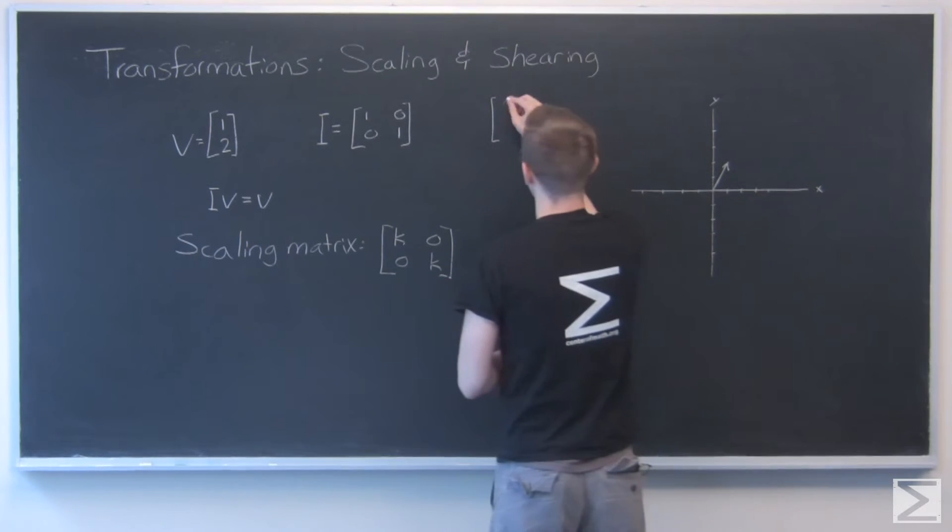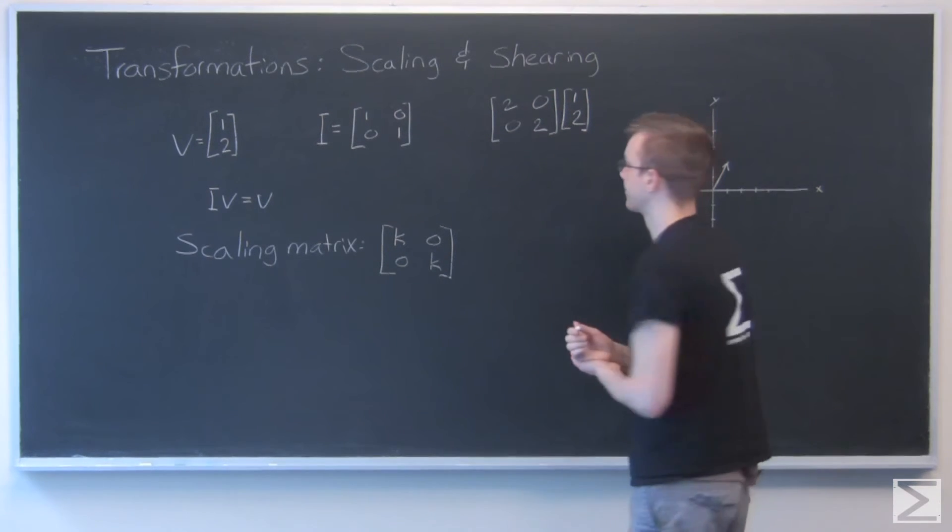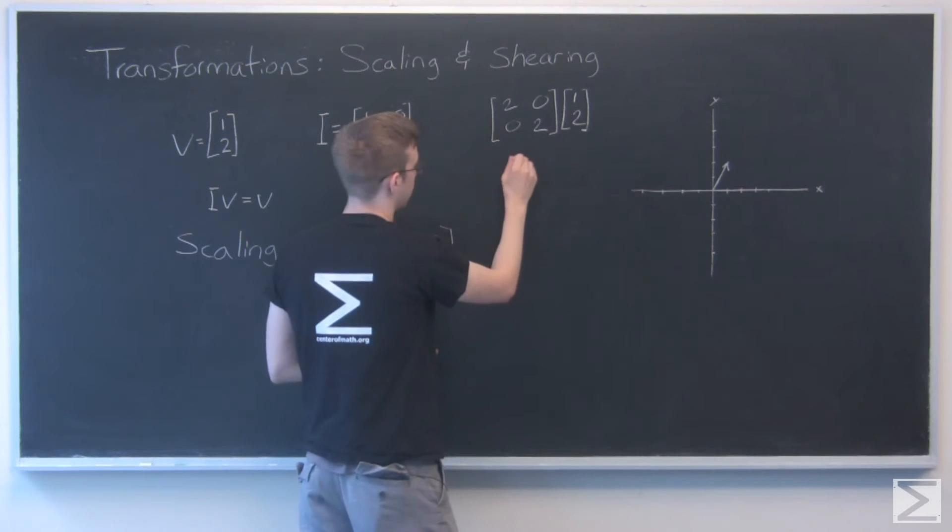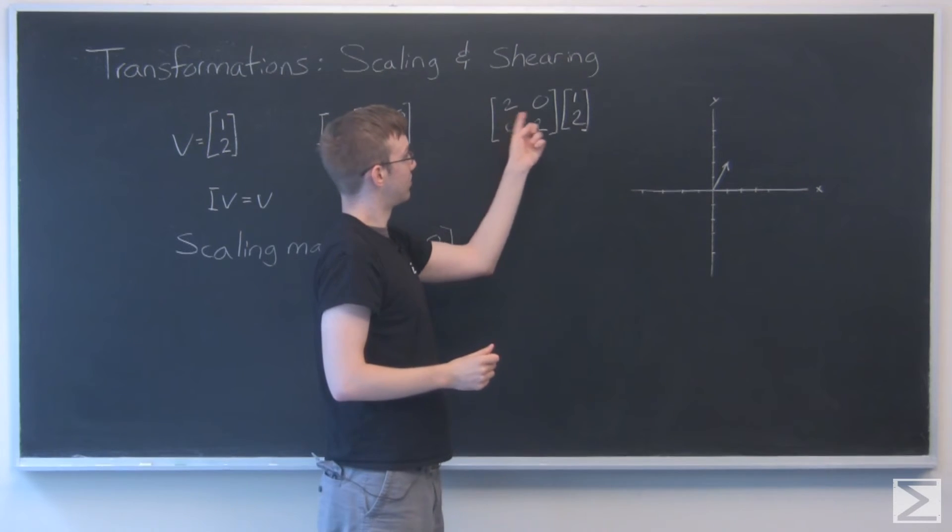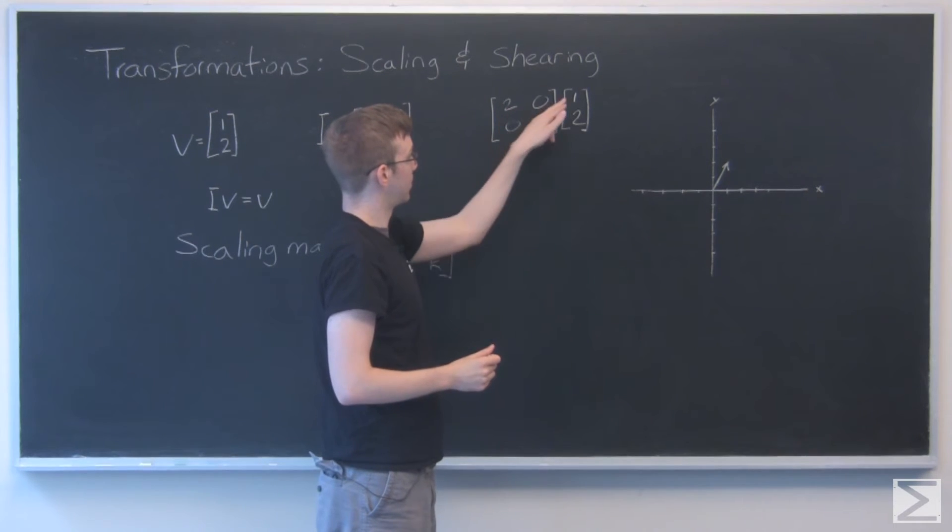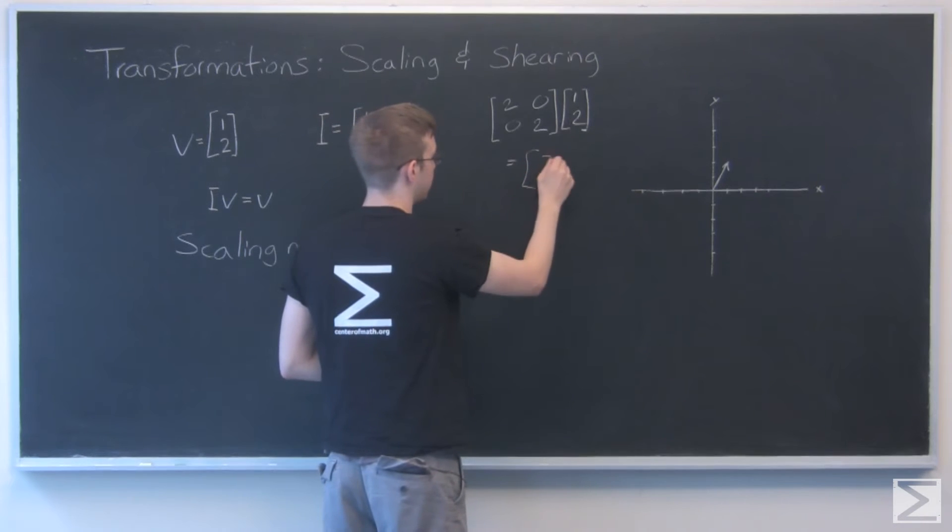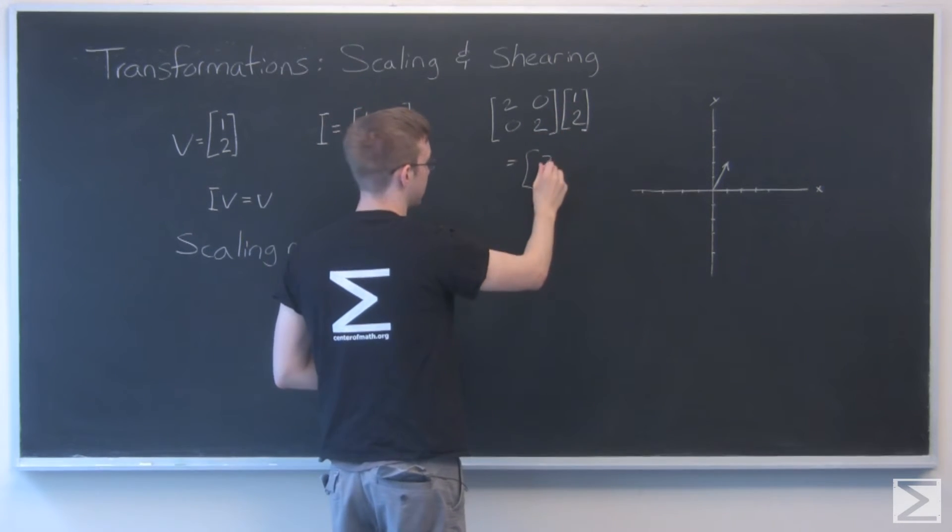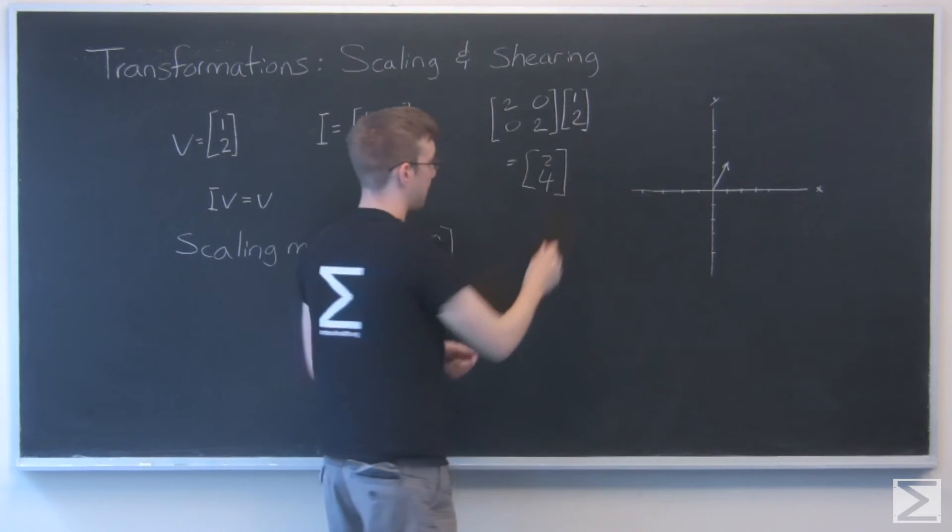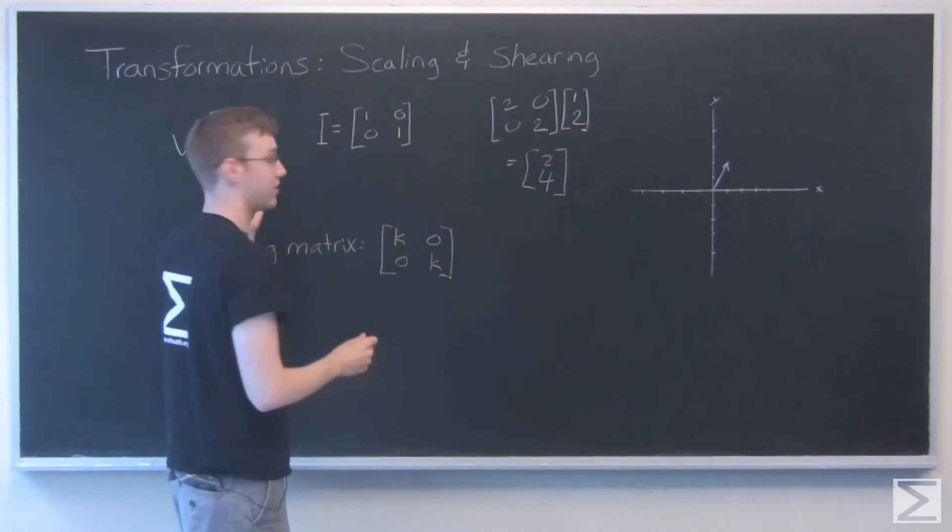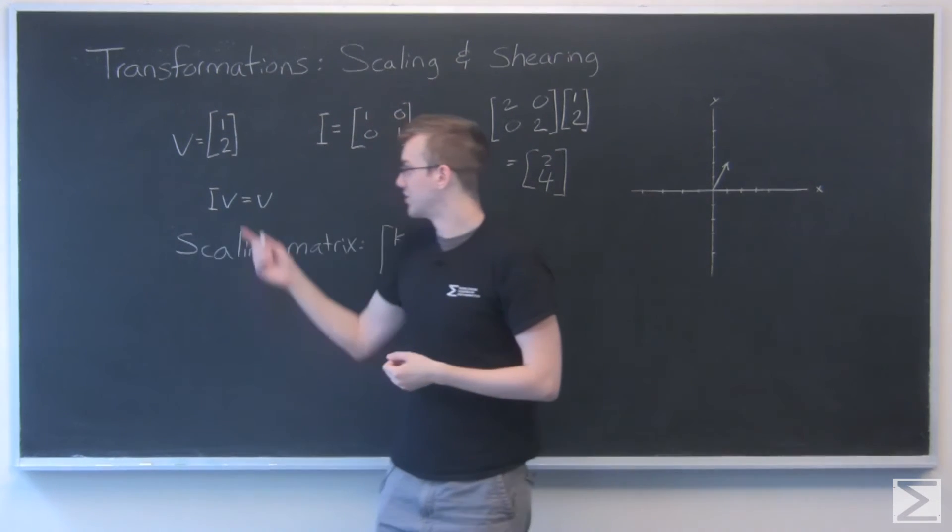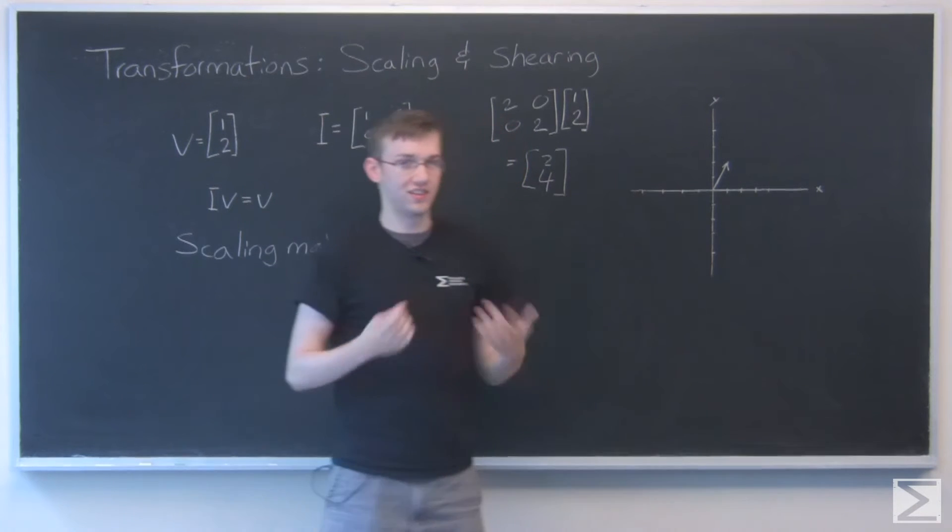So let's plug in 2 for k. We'll have 2, 0, 0, 2 times our vector. Now using our matrix multiplication skills, this is pretty easy because there's a lot of 0s. We just do this out. So we go 2 times 1 plus 0, we get 2, and 0 plus 2 times 2, and that's 4. So that is our scaled vector. Notice this is the same as if we just put that constant in front of the vector in the first place, which is just multiplying that vector by a constant. It is the same thing.